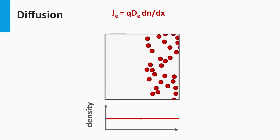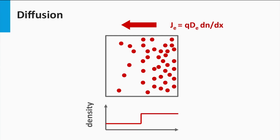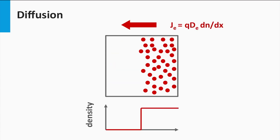Now we consider a non-uniform particle distribution. At the right, the particle density is higher than at the left — in other words, a density gradient is present going from right to left. If these particles all move randomly around, the flux of particles to the volume with lower density on the left will be higher, while the flux to the volume with higher density on the right will be smaller. There will be a net movement of particles until the density is uniformly distributed, at which point no gradient exists and there is no net movement due to diffusion.